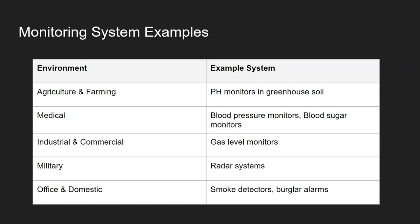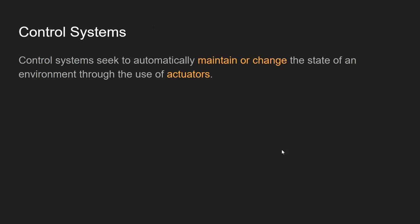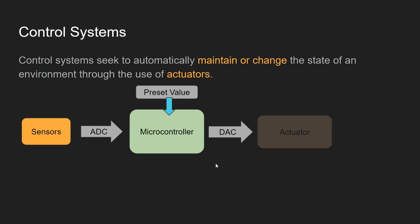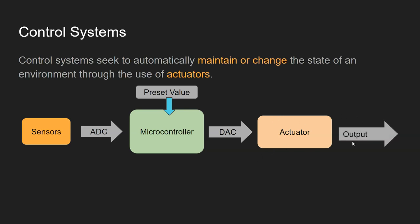Now we move on to control systems. Whereas monitoring systems only seek to observe an environment, control systems actively seek to maintain or change the state of an environment through the use of actuators. We have sensors as before, the data is converted from analog to digital, and it goes to the microcontroller where it is compared to a preset value. Based on that comparison, a signal is sent or varied to the actuator, which affects the output of the system.